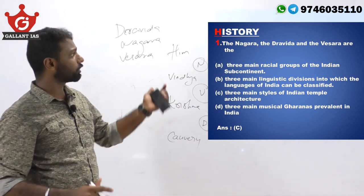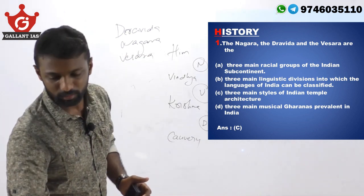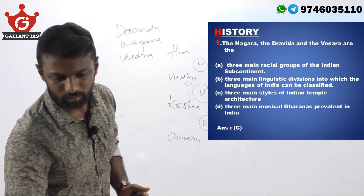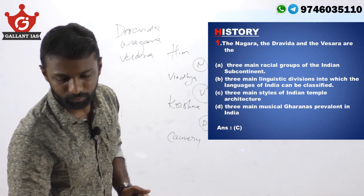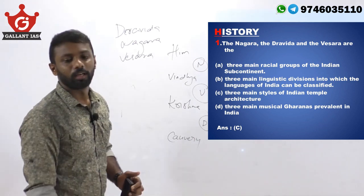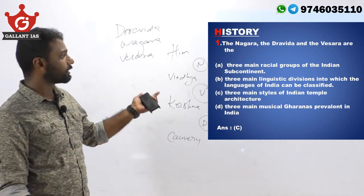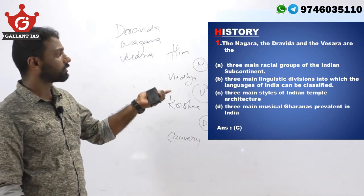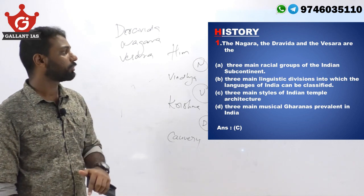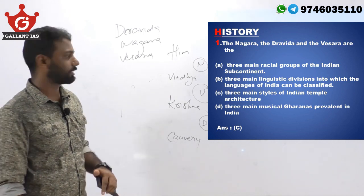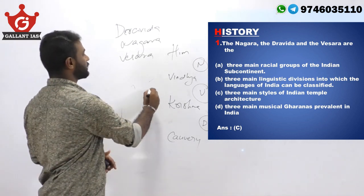Moving on to the answer — it is the three main styles of Indian temple architecture, that is option C.